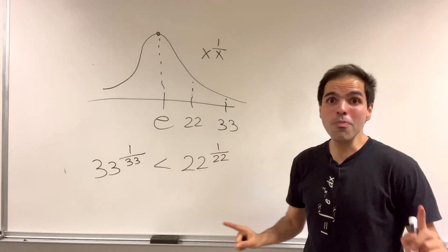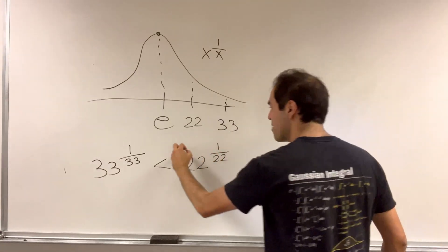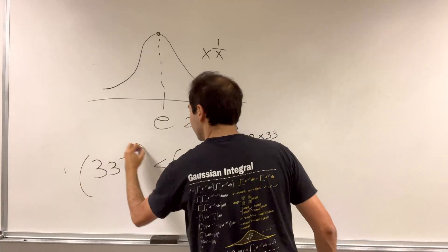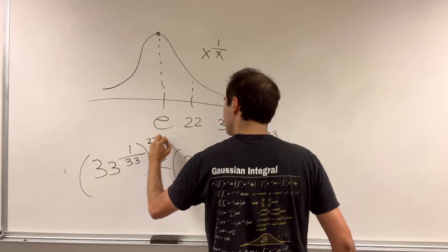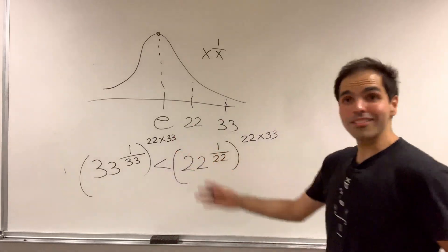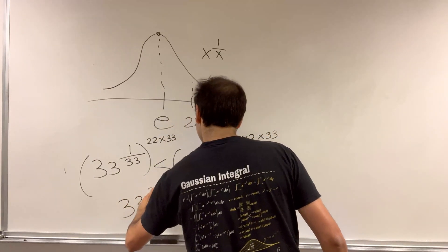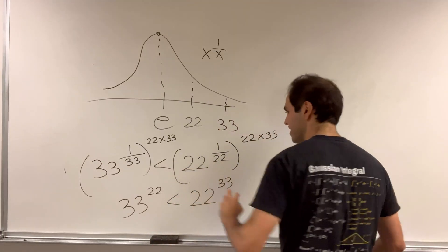Now, raising this to a humongous power, namely 22 times 33, we ultimately get that 33 to the 22 is less than 22 to the 33.